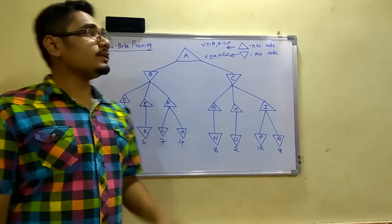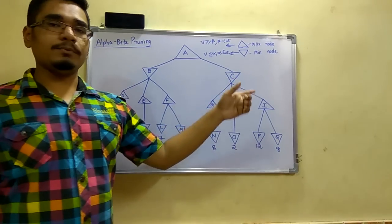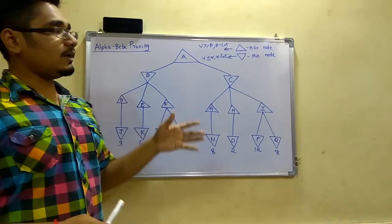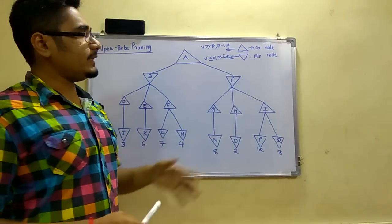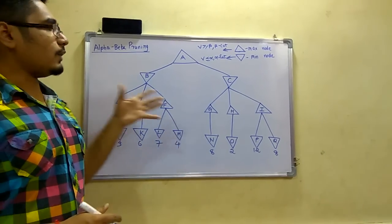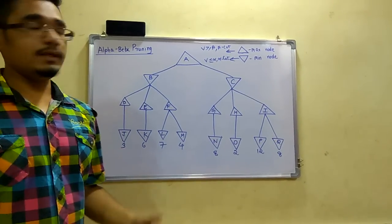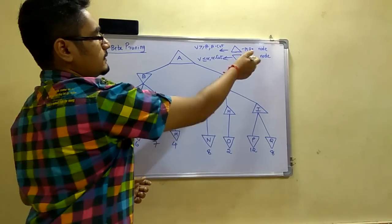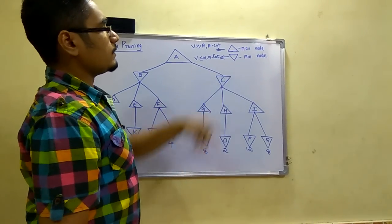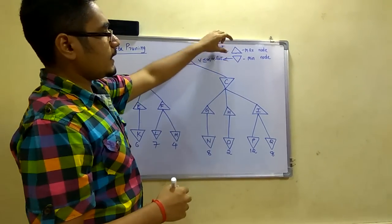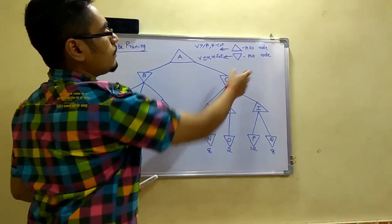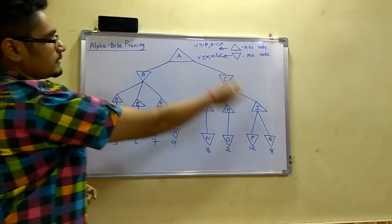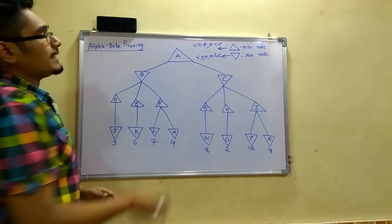Hello viewers. In this video we will be seeing alpha-beta pruning. This is a technique in artificial intelligence to solve the game playing problem. We will see how to prune these trees. In this technique there are two nodes: the max node and the min node. The max node is represented by an upside triangle whereas the min node is represented by a downside triangle, and this tree is comprised of both.